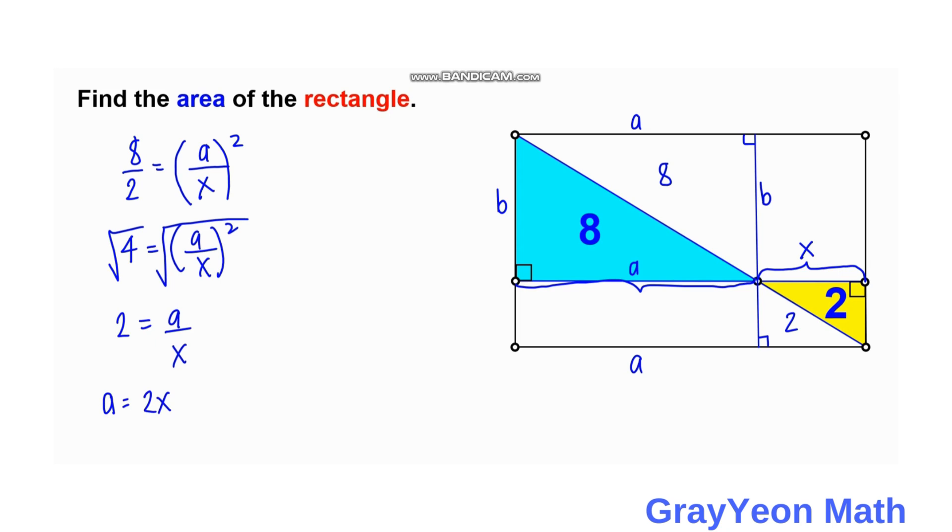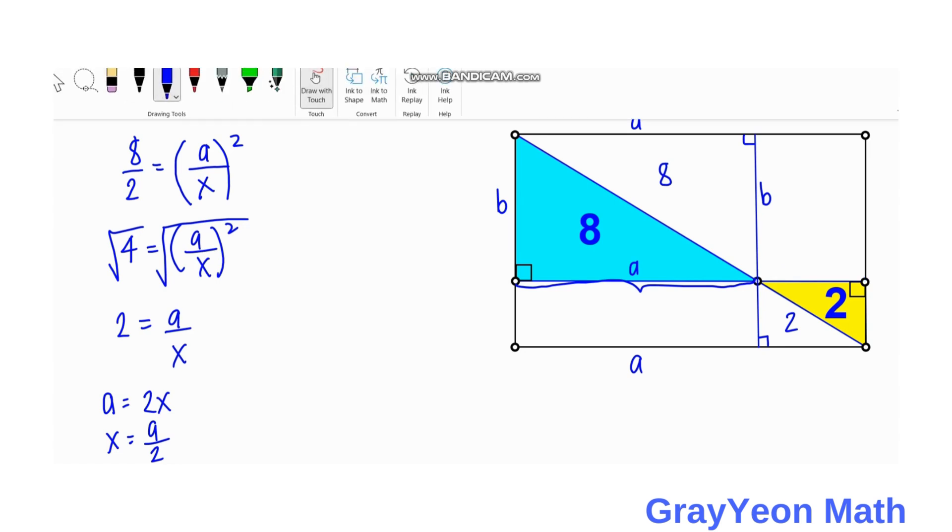Or in terms of, if we write X in terms of A, so X is equal to A over 2. So we can replace this X with A over 2. So we erase this. And we can write here as A over 2.